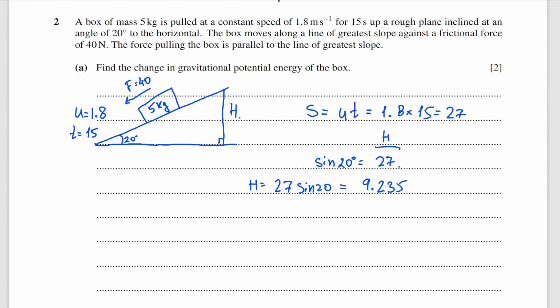Then we can find the potential energy: it is mgh. m is 5, g is 10, and height is 9.235. All in all, I got 461.7 joules, and I will keep that as the answer.